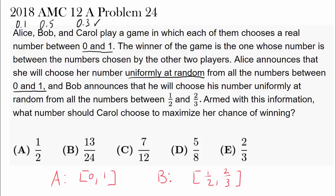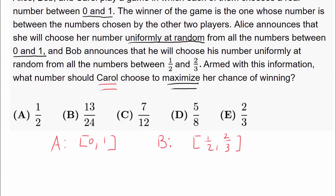Armed with this information, so Carol already knows about this information. Pretty smart person. And what number should she choose to maximize her chance of winning? Well, to maximize her chance of winning, she wants to pick the expected value of the number right in between A and B. So the expected value of the arithmetic mean between A and B.